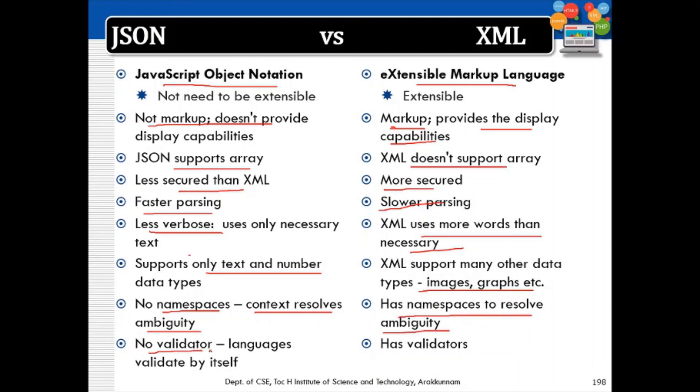JSON has no built-in validator — the language validates by itself — while XML has XML validators. This concludes the comparison of JSON and XML.